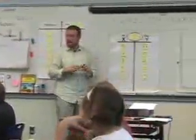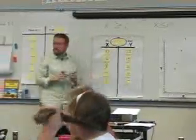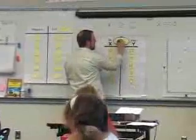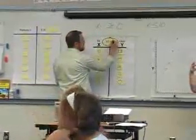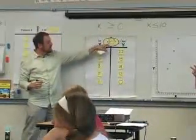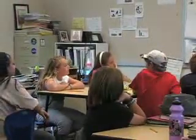Maddie proposes: x3 minus 3. The teacher asks her to walk through what those rules mean. Maddie clarifies: x3 means x times 3, and then take away 3.